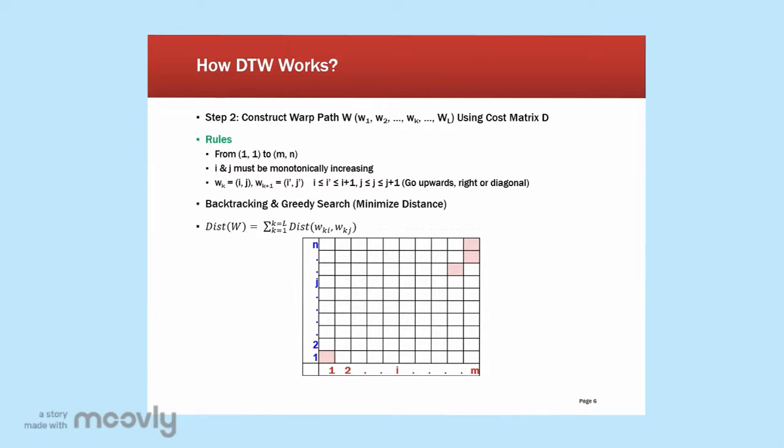So let's move on to step 2, which is to construct the warp path. Actually this is quite easy. You may ignore these rules which seem so complicated. Basically this is a greedy search. And you just compare the value and choose the one that seems the best.